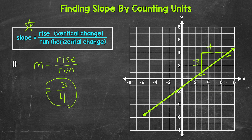The slope tells us that this line goes up three units for every four units it goes to the right. Before moving on to number two, I want to show that any other two points will work as well. If we pick another pair of points, we go up three units (rise = 3) and over four units (run = 4), and we end up with the same slope.